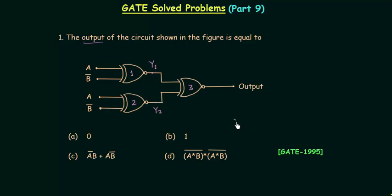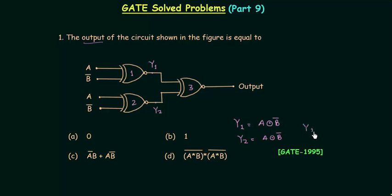The output of the first XNOR gate, y1, is simply equal to a XNOR b complement, because a and b complement are the two inputs. The output of the second XNOR gate, y2, is also equal to a XNOR b complement. Both outputs y1 and y2 are equal, so let's call it y.